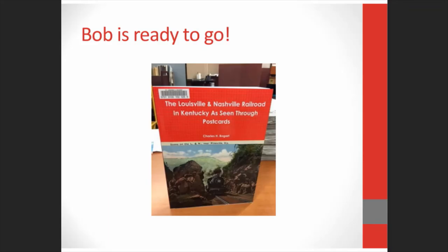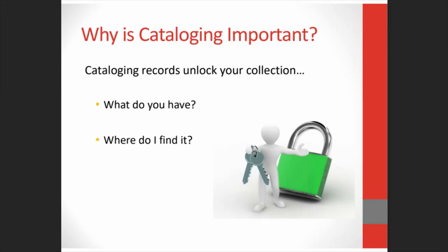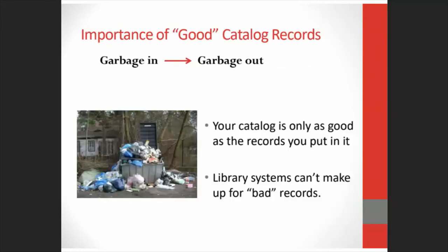Bob has come to the end of his cataloging journey — he's been stamped, labeled, and barcoded, and he's ready to go out there and impart knowledge to the people. Now that we've talked about all the different aspects of cataloging and what goes into a catalog record, we're going to take a brief look at why cataloging is important. Cataloging records unlock your collection for your patrons and you. They answer the questions: what do you have in your collection and where do I find it? Without the catalog, you're relying on serendipity as your search engine. Your catalog is only as good as the records you put in it, and library systems can't make up for bad records — if there isn't good information in your catalog records, your patrons aren't going to find what they want or need.